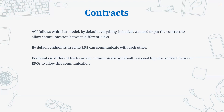If two endpoints belong to two different endpoint groups, they cannot communicate by default. If we want them to communicate, we need to put a contract between these endpoint groups.